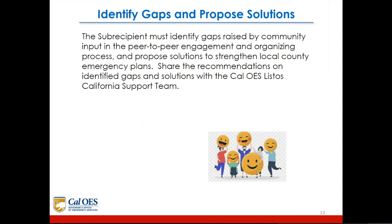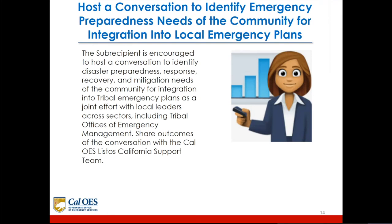The subrecipient must identify gaps raised by community input in the peer-to-peer engagement and organizing process and propose solutions to strengthen local county emergency plans. They should share recommendations on identified gaps and solutions with the CalOES Listos California support team. The subrecipient is also encouraged to host a conversation to identify disaster preparedness, response, recovery, and mitigation needs of the community for integration into tribal emergency plans, as a joint effort with local leaders across sectors including tribal office of emergency management.